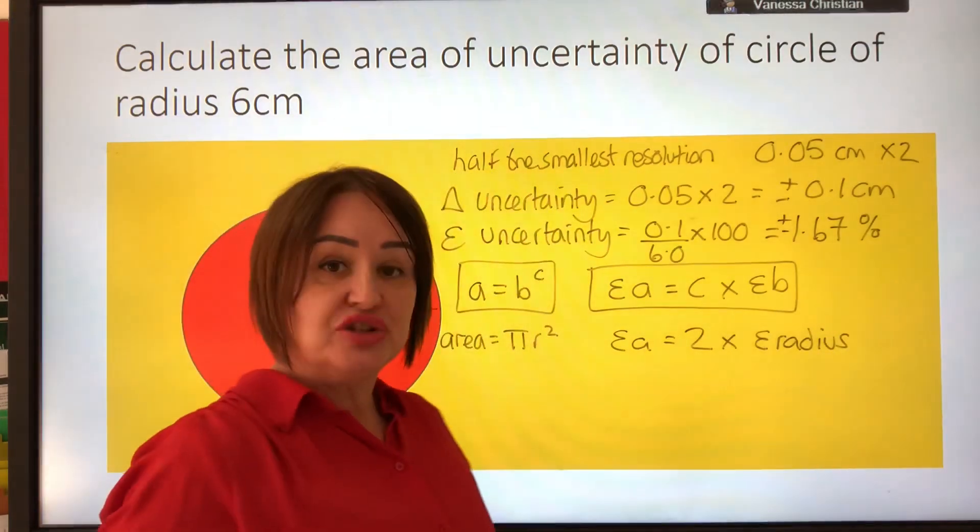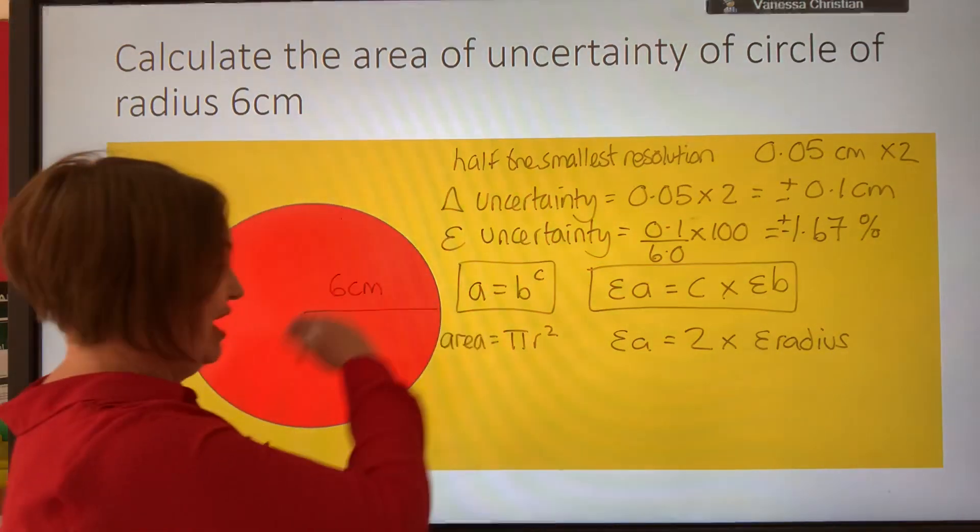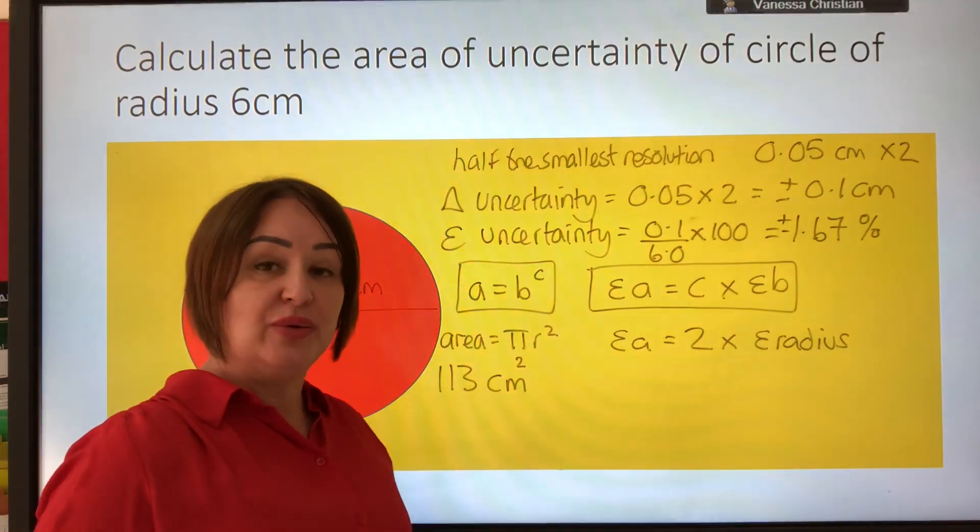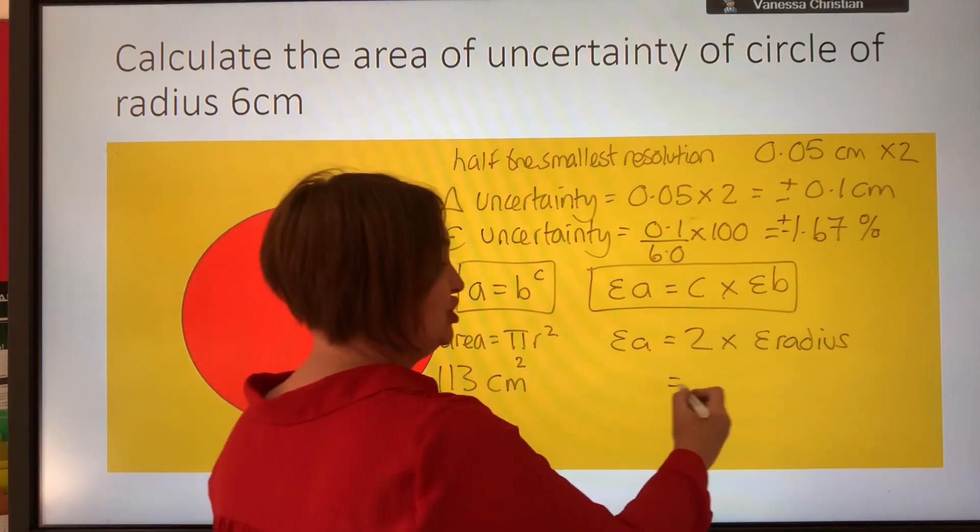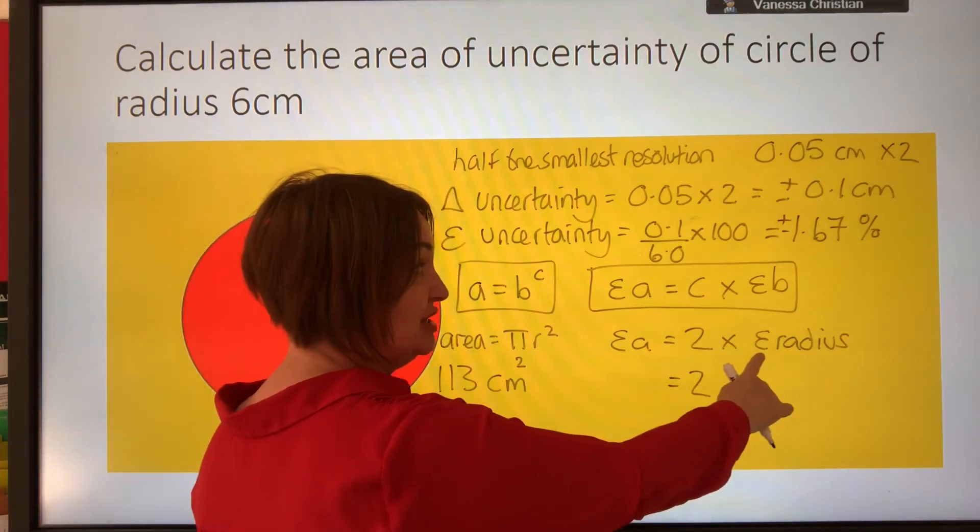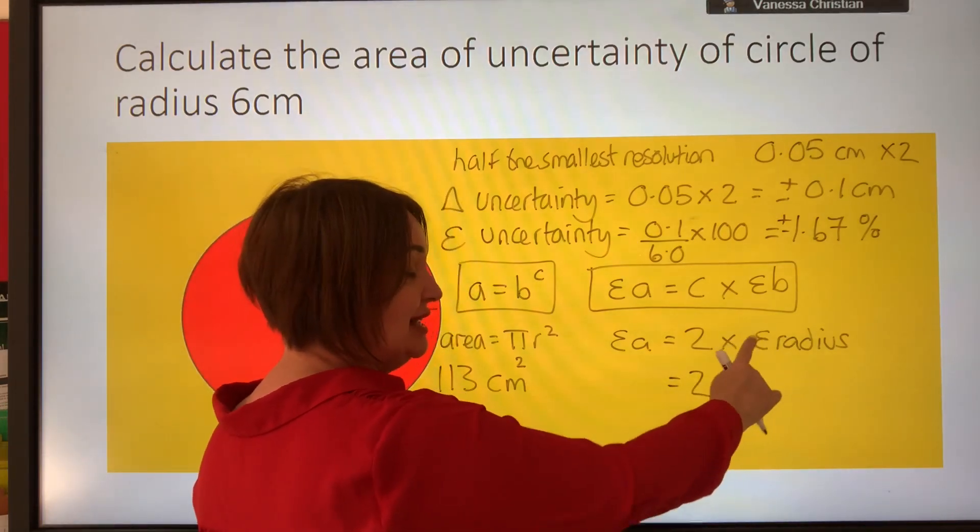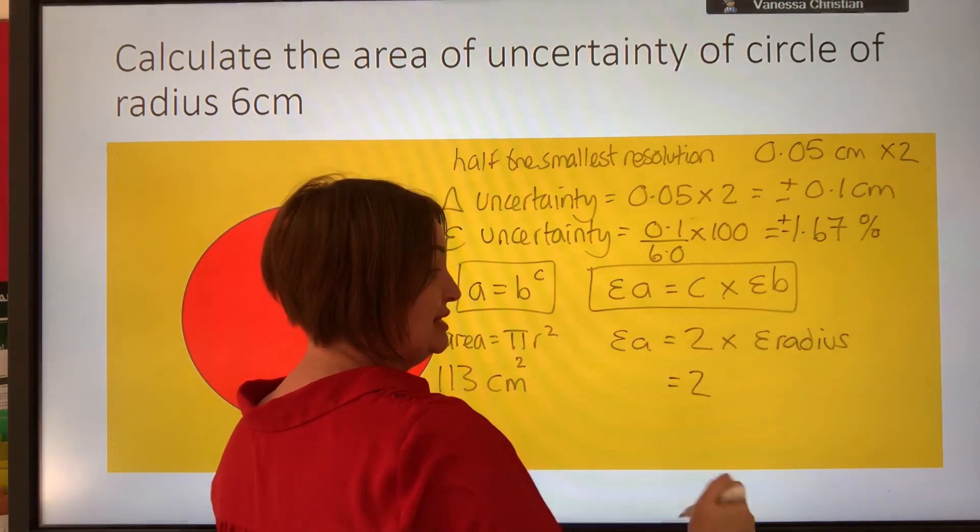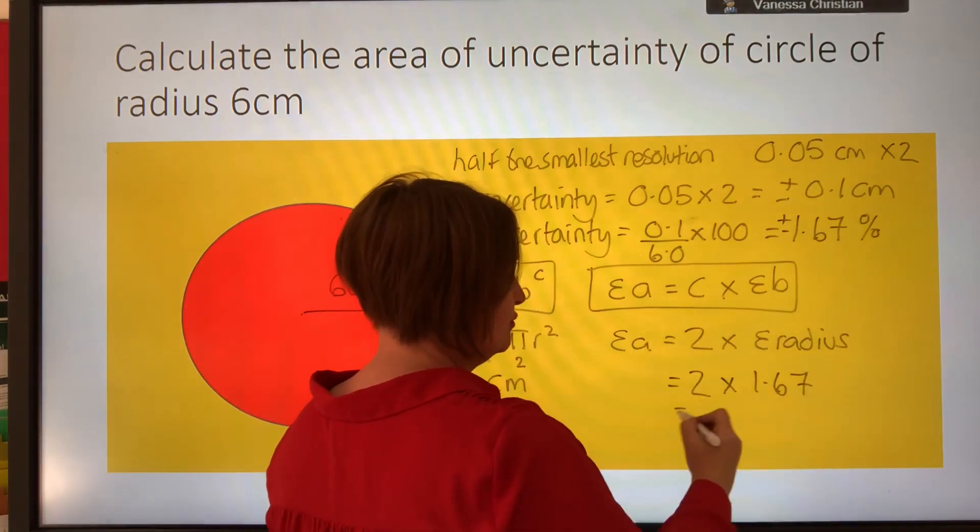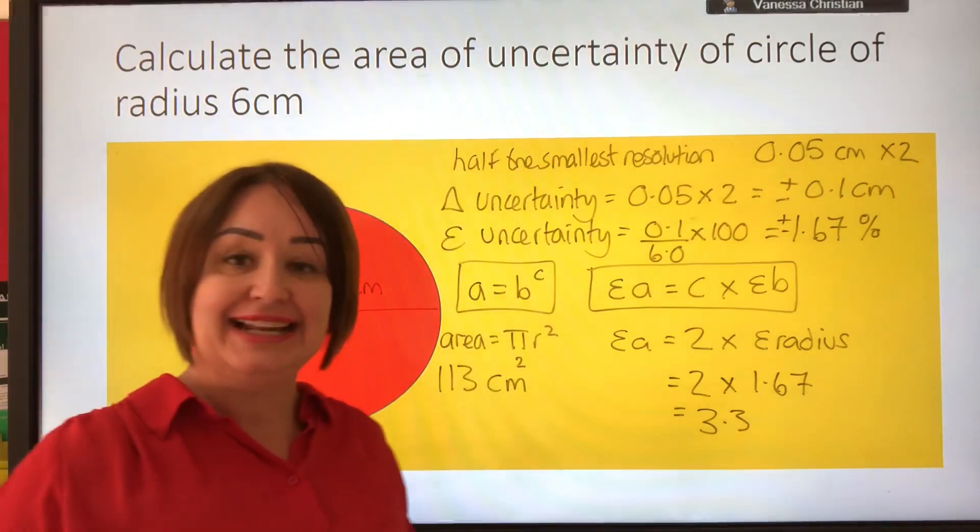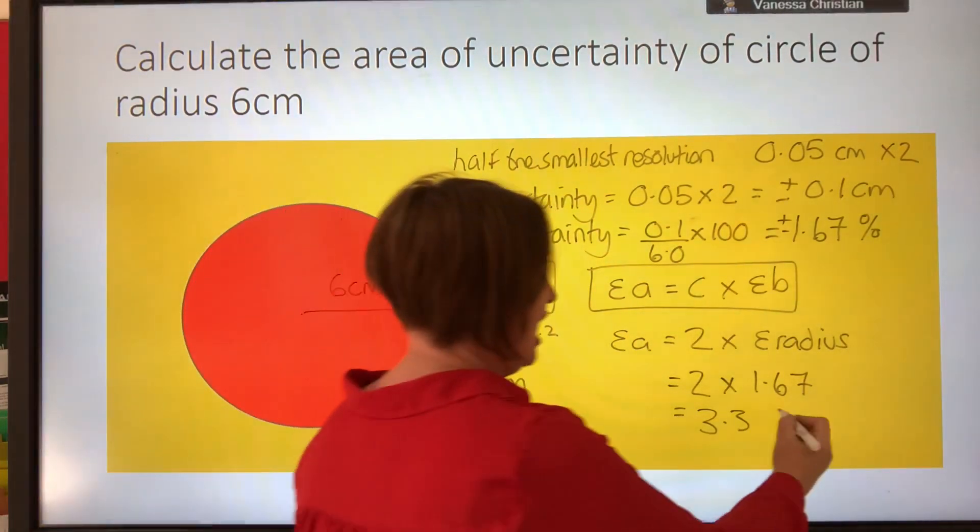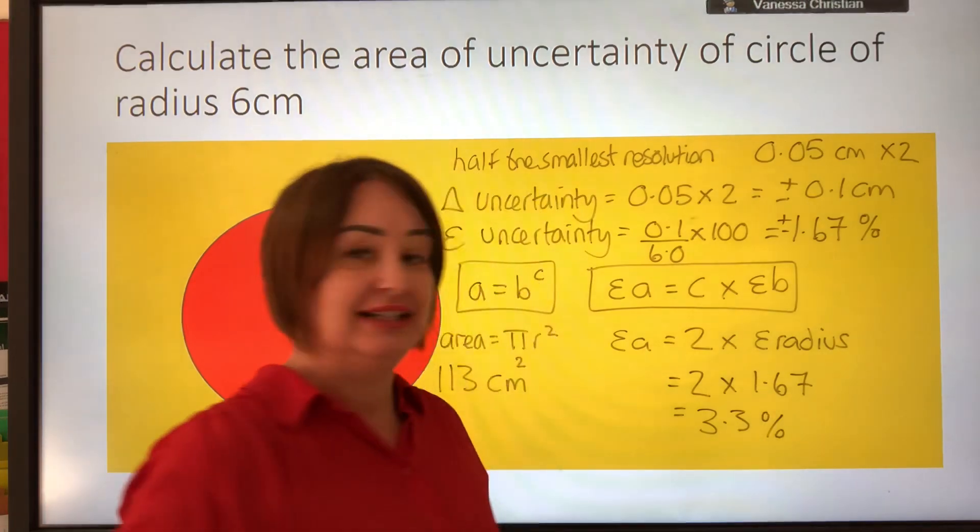So let's just quickly work out our area. We know that the percentage uncertainty is 2 times the percentage uncertainty for the radius. The percentage uncertainty for the radius is 1.67, so 3.3. Again, it's a percentage, so it doesn't have any units.